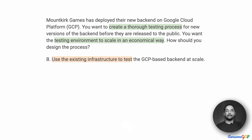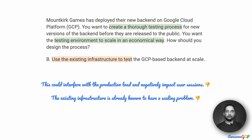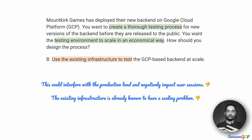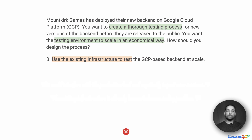Option B suggests that you use the existing infrastructure to test the GCP-based backend at scale. This is just not viable. If you are going to use the existing production infrastructure to do tests, this would interfere with the production load and could have a negative impact on user sessions. If there are a large number of users on the system and we also do a heavy stress test, it is probably going to cause capacity issues and maybe reject actual user sessions. Also, from the case study, we know the existing infrastructure already has scaling problems. There is absolutely no way we should be running stress tests as part of the production setup, so option B is eliminated.